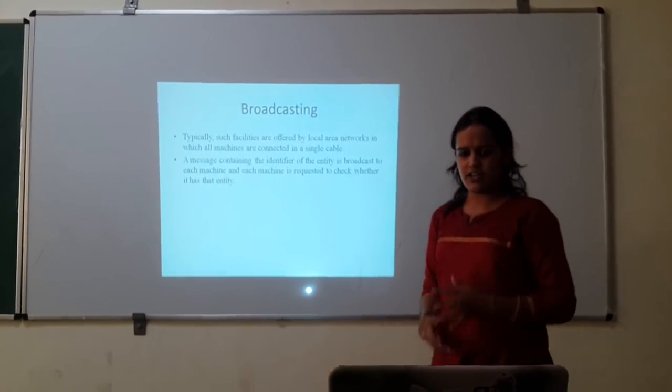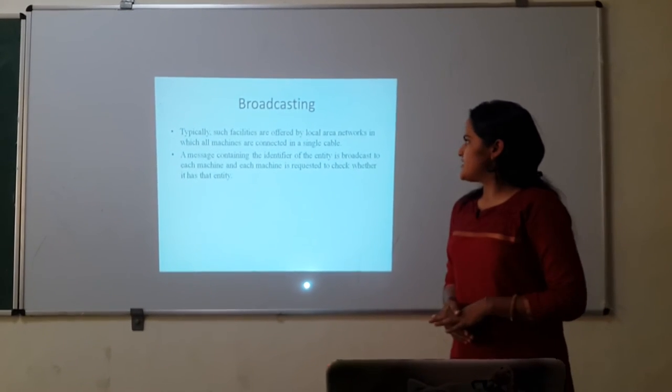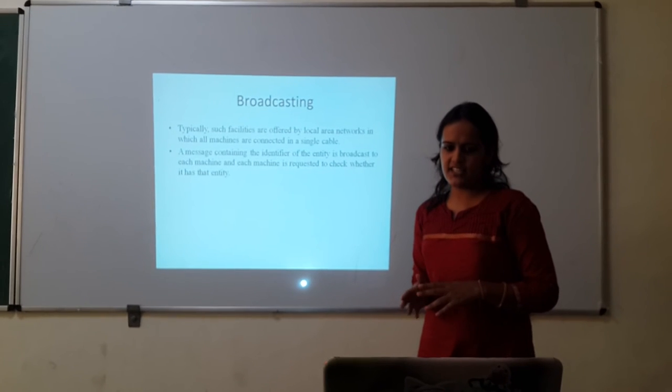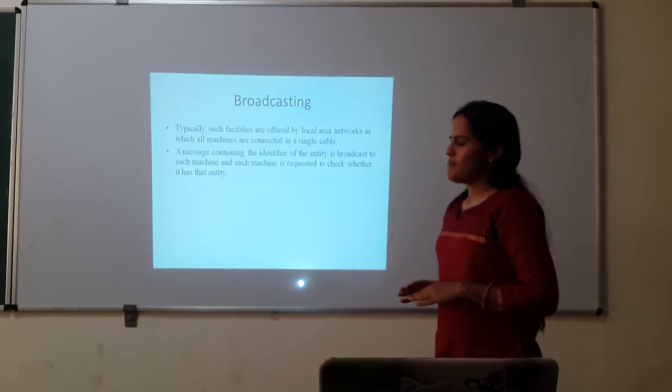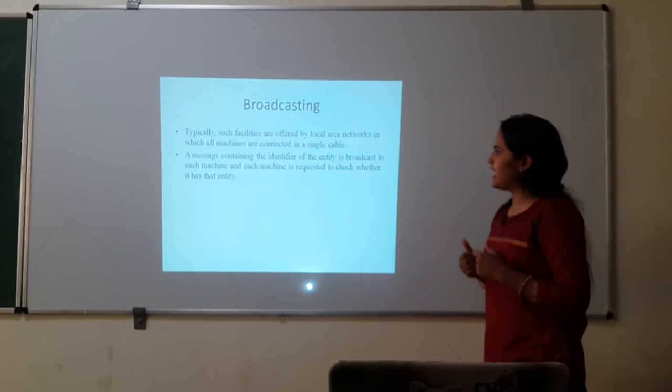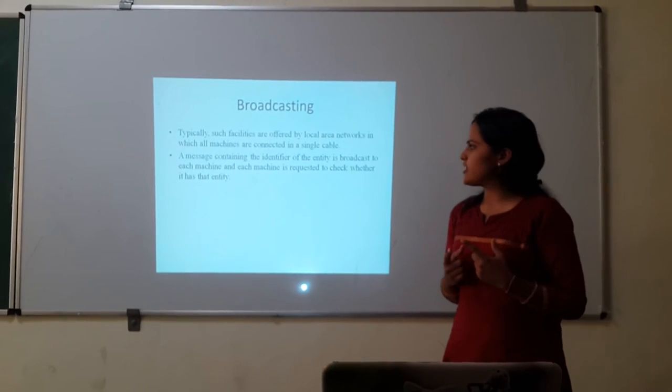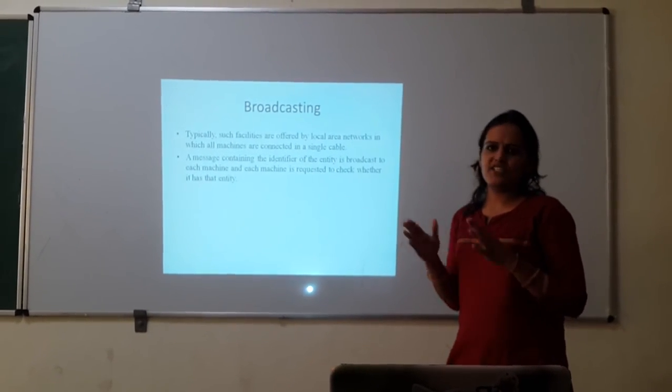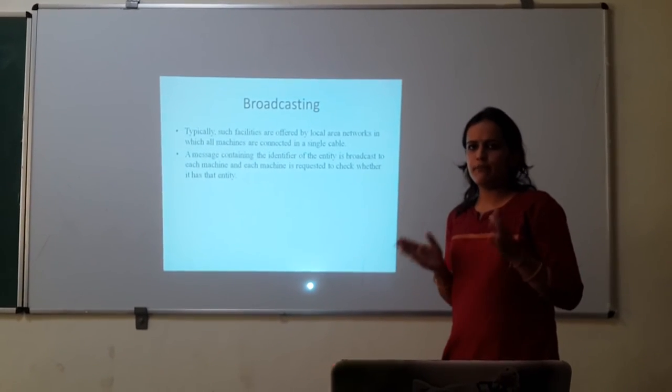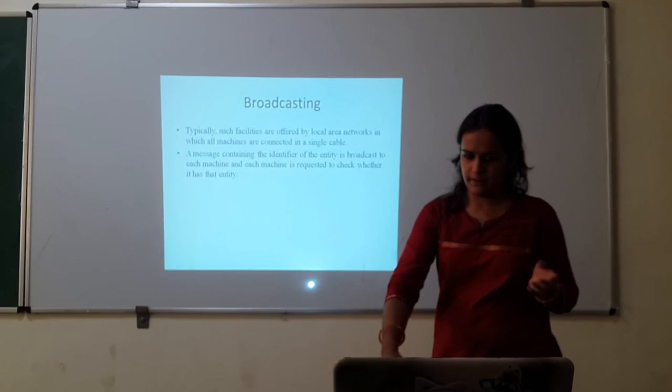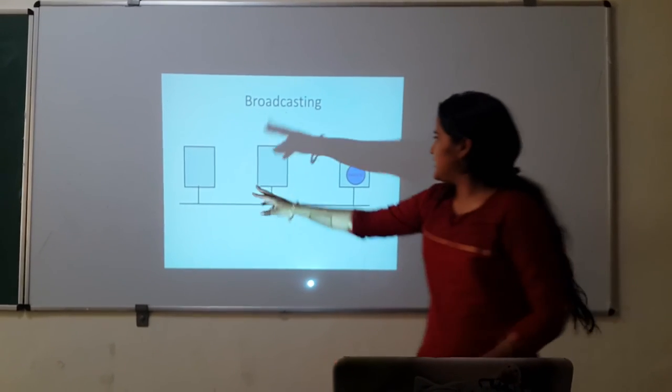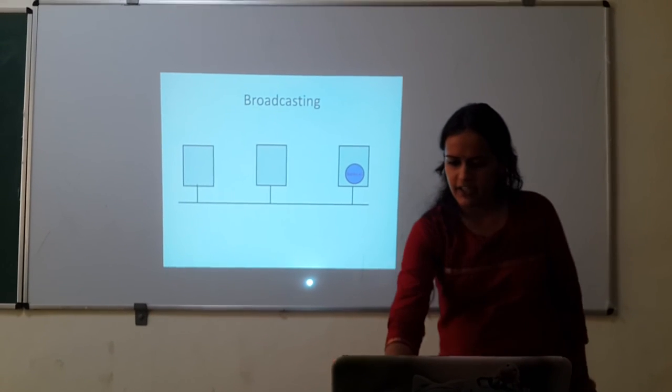Broadcasting. Typically such facilities are offered by local area networks. LANs use these facilities in which all machines are connected to a single cable. Then a message containing the identifier of the entity is broadcast to each machine. Then each machine is checked if it contains the entity address which is needed by the host machine. This is the diagram. These are the three machines which we have taken.